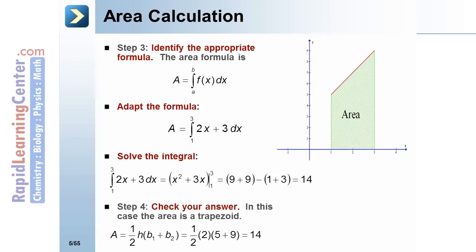Step 4: We check the answer. In this case, the area is a trapezoid. Using the area of the trapezoid formula, which is 1/2 × h × (base₁ + base₂), we get 1/2 × 2 × (5 + 9), which gives 14. Note that this agrees with the earlier answer.